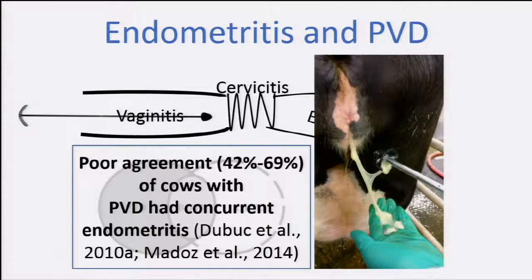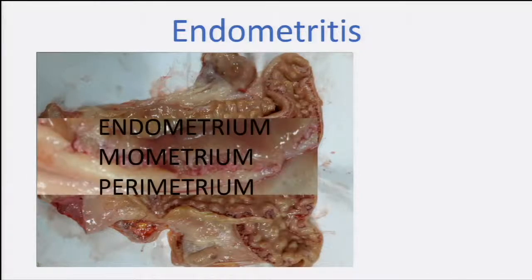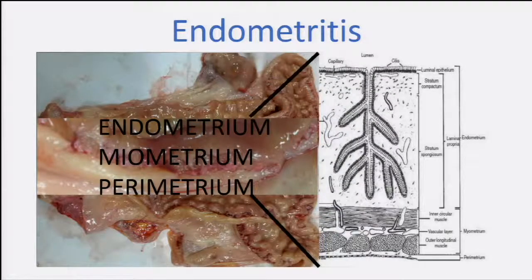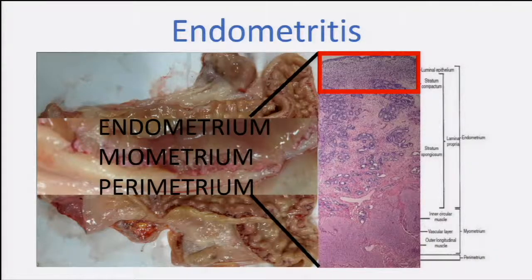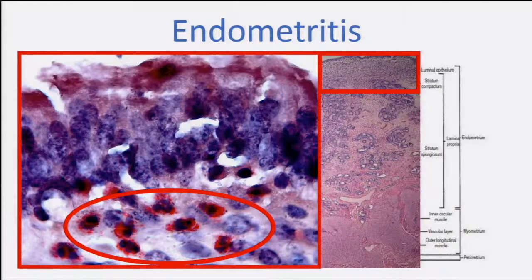There is a poor agreement between purulent vaginal discharge and endometrial cytology, which is why we can already prove that they're not the same disease. To diagnose endometritis, we first have to define what inflammation of the uterus we have. When we cut the uterine layers, we have the endometrium — the more superficial part — the myometrium, and the perimetrium. The endometrium has two parts: the stratum compactum, which is the superficial part, and the stratum spongiosum. When talking about subclinical endometritis, we are referring to the presence of polymorphonuclear cells in the superficial endometrium — the stratum compactum.